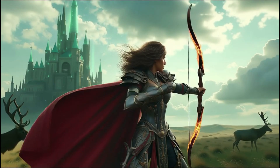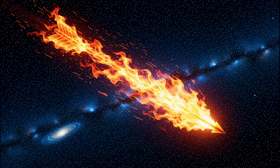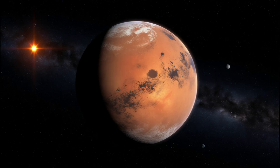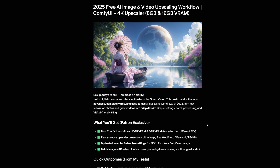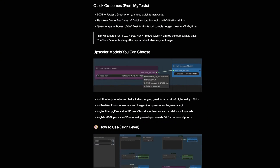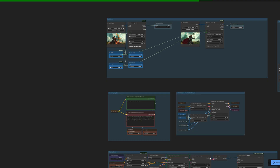To increase dynamism, you can crop keyframes from generated images, change the angle, and use them as end nodes to create more motion. Note that cropped keyframes may be a bit blurry — to improve quality, enhance details first with Qwen or Flux. You can refer to the workflow I previously published, which can be found on my Patreon.